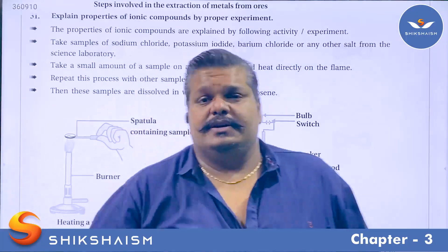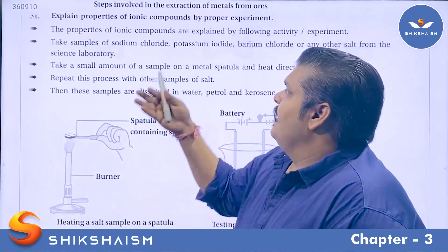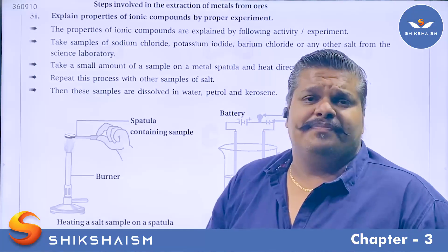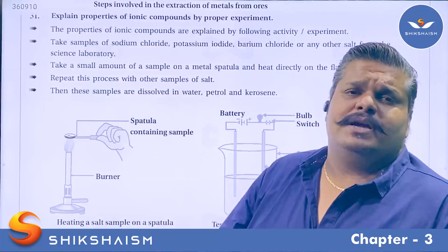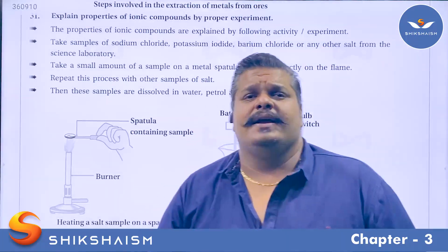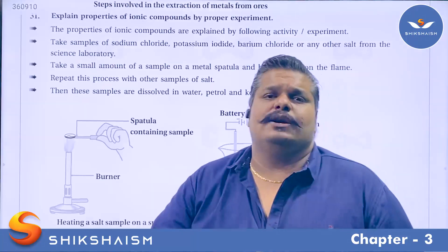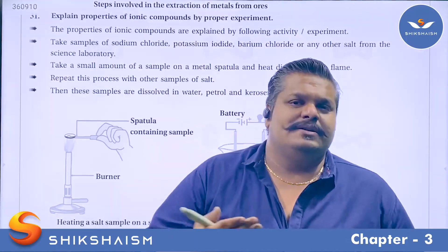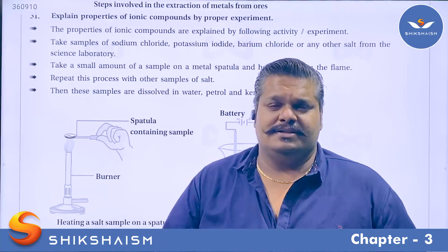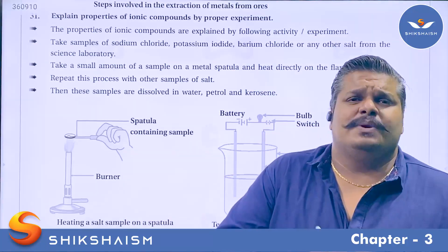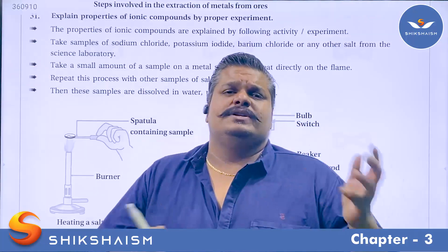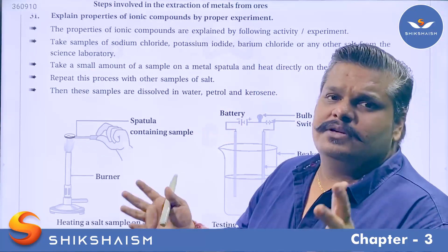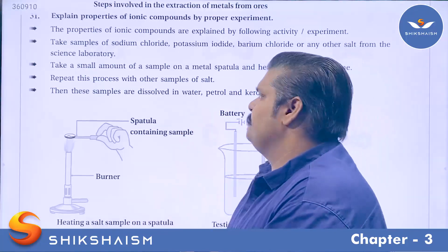The next important question is: explain the properties of ionic compounds by proper experiment. Ionic compounds are produced by highly electropositive and highly electronegative elements. Highly electropositive means metals; highly electronegative means nonmetals. When metal and nonmetal combine together, gaining and losing of electrons occurs, ionic bonds are formed, and ionic compounds are obtained.